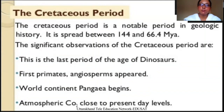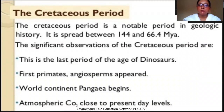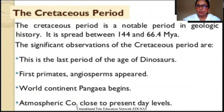The last one is the Cretaceous period. The Cretaceous period is a notable period in geological history. It is spread between 144 to 66.4 million years ago. The significant observations of the Cretaceous period are: this is the last period of the age of dinosaurs. The first primates and angiosperms appeared. The wild continent Pangaea began breaking up. Atmospheric carbon dioxide grew to present-day levels.